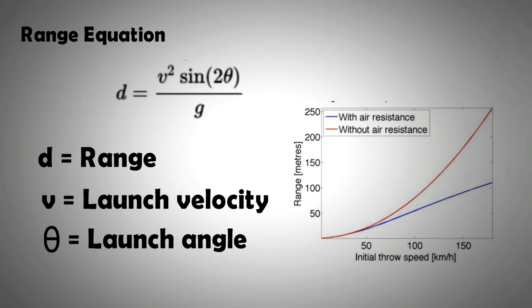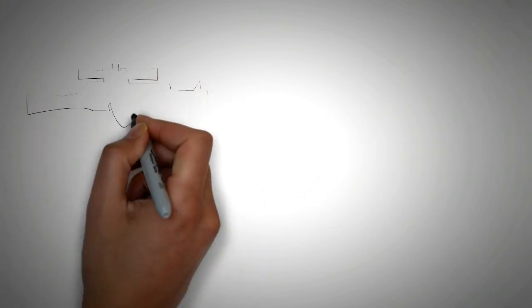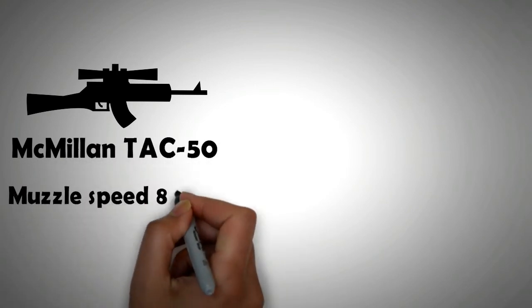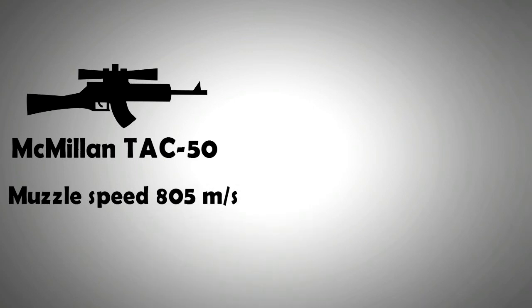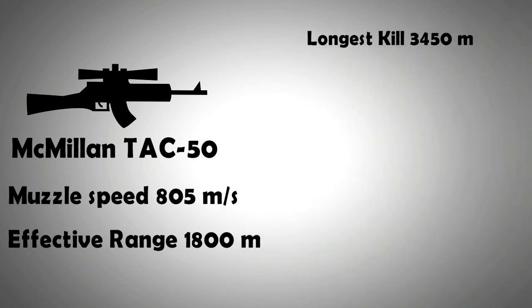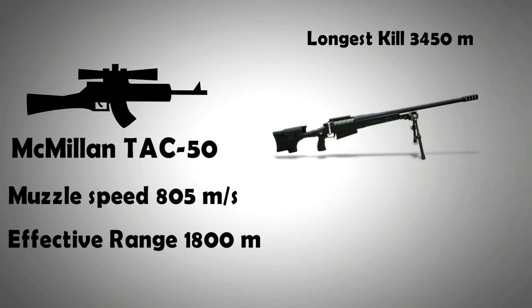The longest sniper kill ever recorded was at a distance of 3450 meters with a weapon called Macmillan TAC-50 rifle. The specification of this rifle indicates a muzzle speed similar to Dragunov, that is 805 meter per second, but the effective range for this gun is 1800 meters, that is more than double the range of Dragunov. And this is due to the different bullets used in both guns. This highlights that in addition to chamber speed, the aerodynamics of the bullet are extremely important for maximizing range and accuracy.